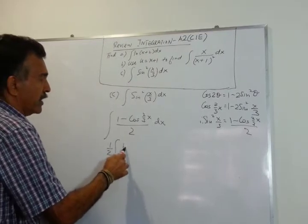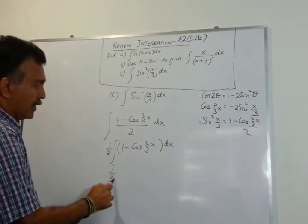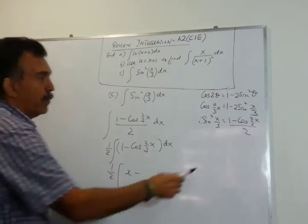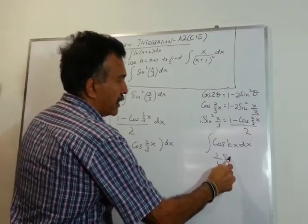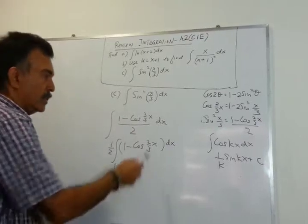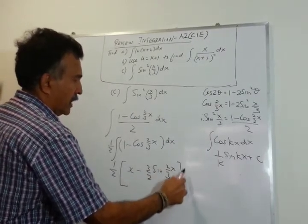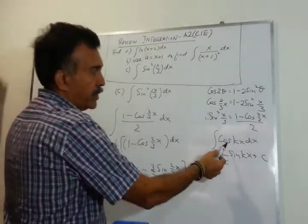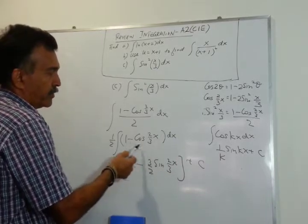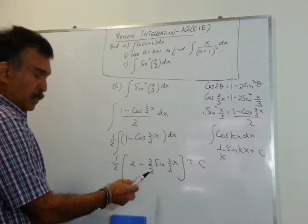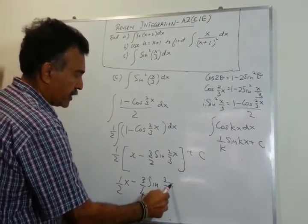Bringing the half outside, we have one half times the integral of (1 minus cos(2x/3)) dx. When you integrate 1 you get x. Using the formula that the integral of cos(kx) equals (1/k)·sin(kx), here k equals 2/3, so dividing by 2/3 gives a factor of 3/2. The final answer is one half times x minus (3/2)·sin(2x/3), giving us (1/2)x minus (3/4)·sin(2x/3) plus c, and we are done.